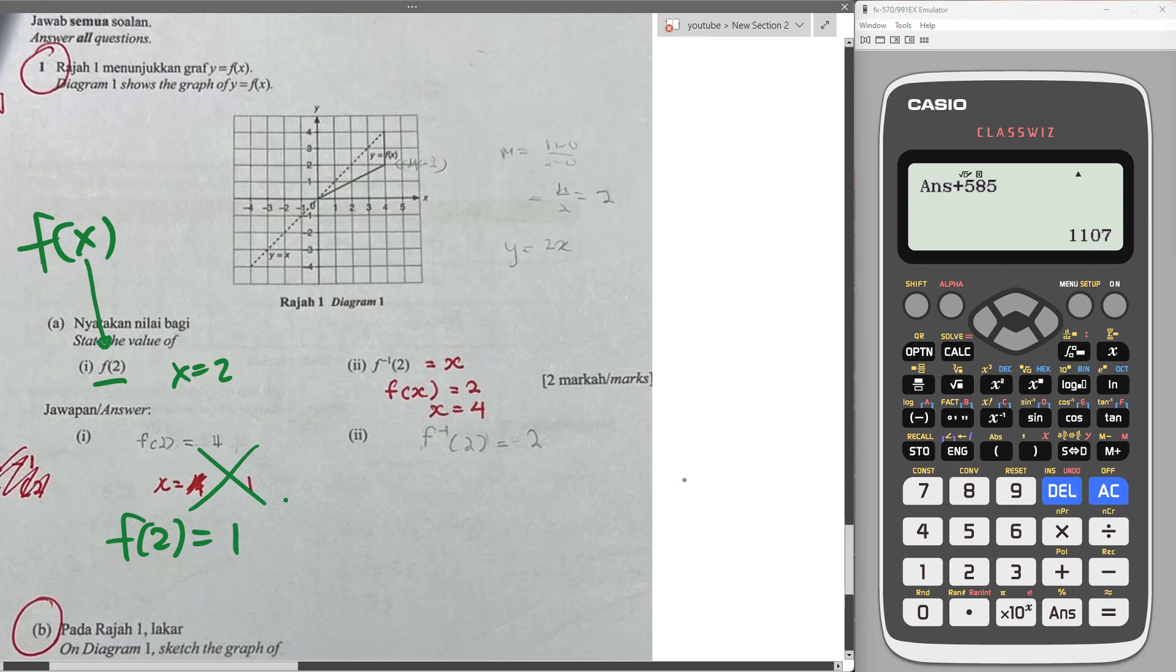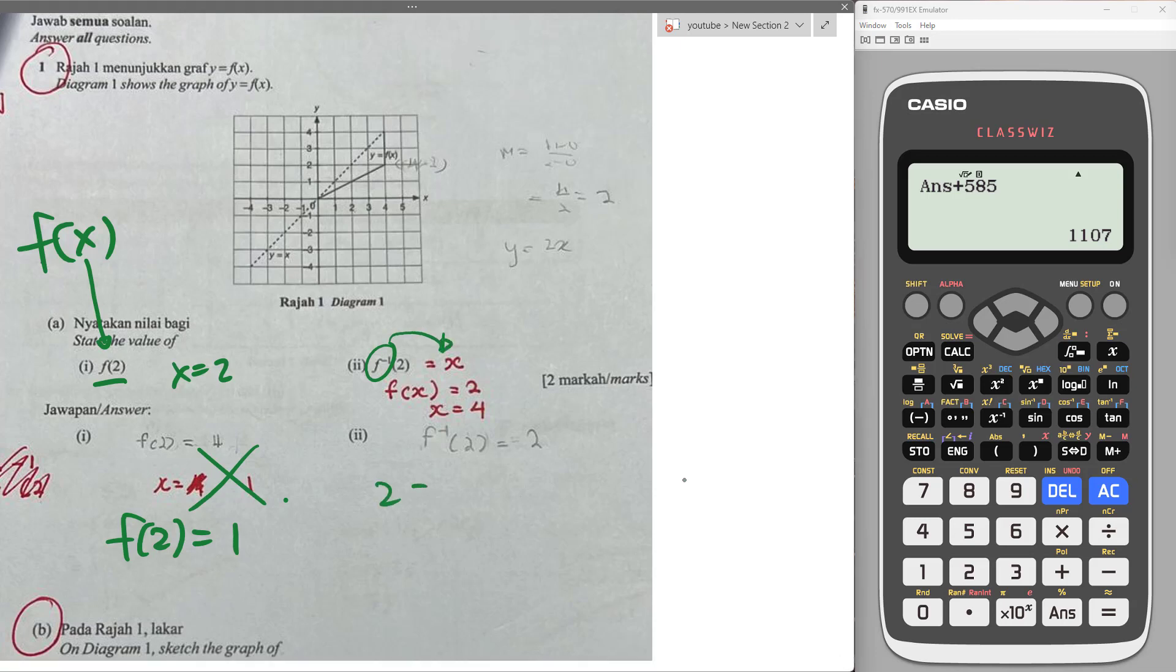Alright, same idea to this one. For f inverse 2, I'm not sure this one is he do or his teacher do for him. But basically, of course, first thing you can draw the inverse function if you want to, and then sub into 2. But we know f inverse, if throw to the other side, then we will get 2 equals to f(x).